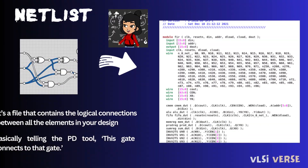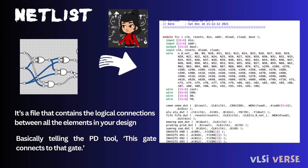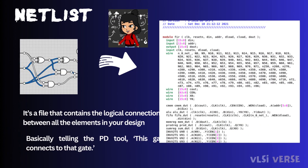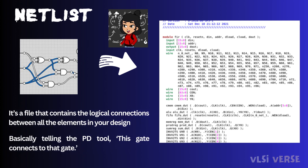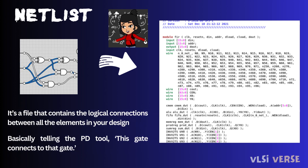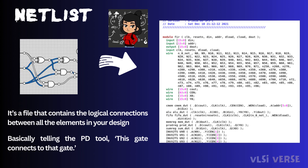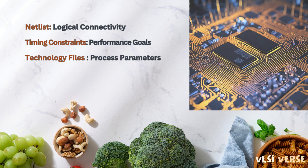This netlist is derived from the synthesis process. Once the RTL file is given to the synthesis engineer, the synthesis process is performed by a synthesis tool — either DC from Synopsys or the Cadence Genus tool. Then LEC is performed, and once LEC is passed, this golden netlist is given as an input to the PnR tool.